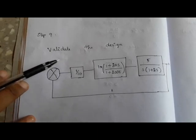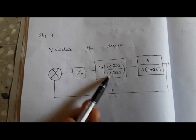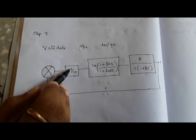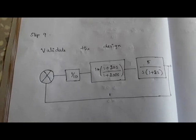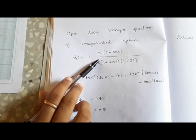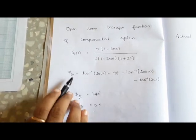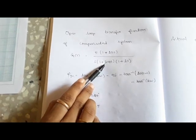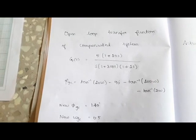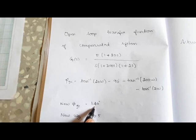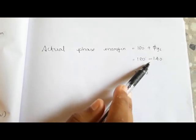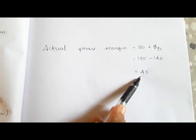The design should now be validated, so we construct a block diagram. In the first block we place G_L(s), the lag compensator transfer function. In the second block we place the given G(s). Since G_L(s) introduces a factor of 10, we use 1/10 for cancellation. The feedback is 1. By cascading the two blocks we obtain the compensated G_c(s). Substituting the new omega_gc into the phase expression — tan⁻¹(20ω) minus 90 minus tan⁻¹(200ω) minus tan⁻¹(2ω) — gives φ_gc equal to minus 140 degrees. The actual phase margin is 180 plus (minus 140), equal to 40 degrees, which matches the desired phase margin given in the question.